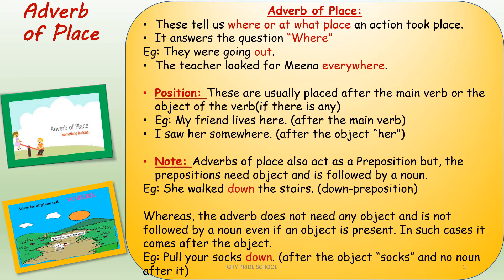Let's start our discussion with adverb of place. Adverb of place tells us where or at what place an action took place. So it answers the question 'where'. Now if you look at the example: they were going out. They were going where? Out. So it is telling us where they were going and what place — so it is adverb of place.